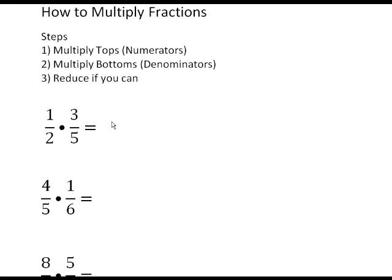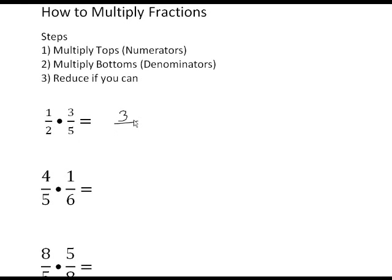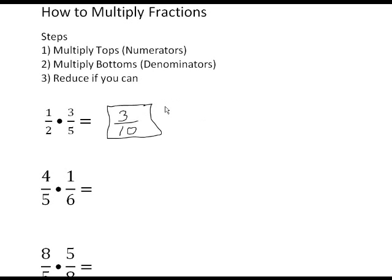Step one: multiply the tops — one times three is three. Step two: multiply the bottoms — two times five is ten. Step three: reduce if you can. Three over ten cannot be reduced. Remember, reducing is dividing the top and bottom by the same number. They cannot be, so my final answer is three over ten.